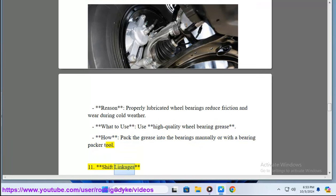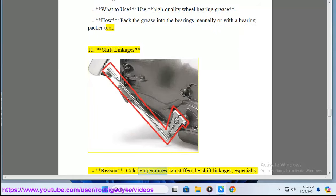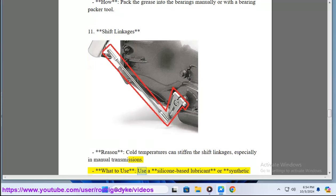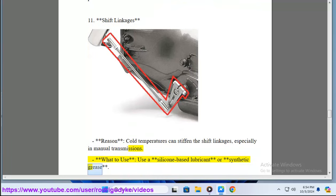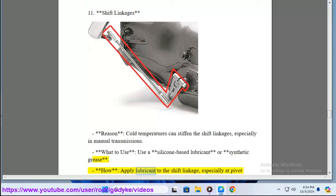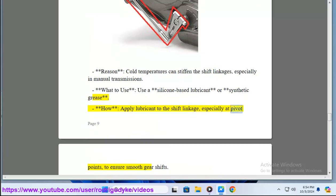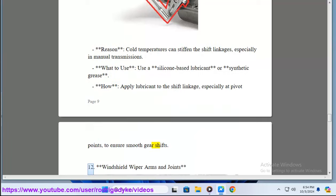11. Shift Linkages. Cold temperatures can stiffen the shift linkages, especially in manual transmissions. What to use? Use a silicone based lubricant or synthetic grease. How? Apply lubricant to the shift linkage, especially at pivot points, to ensure smooth gear shifts.